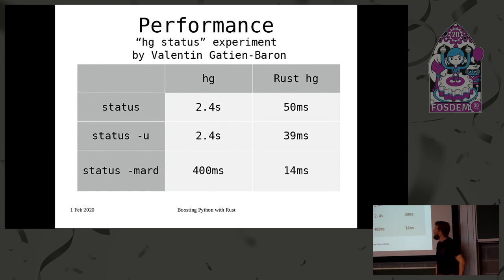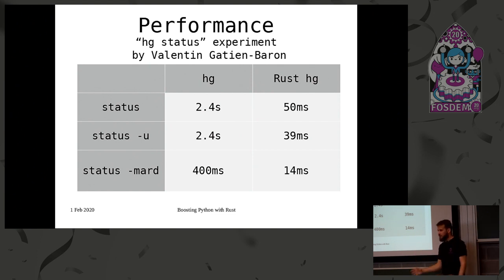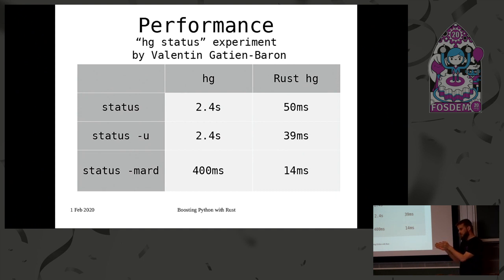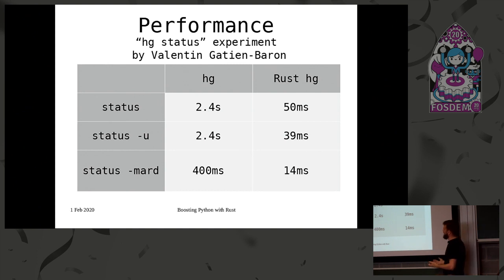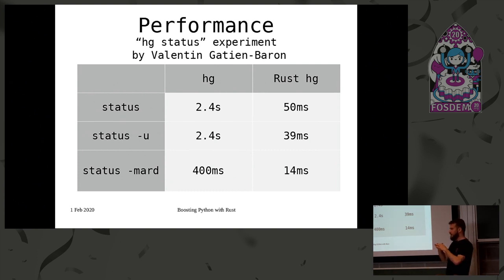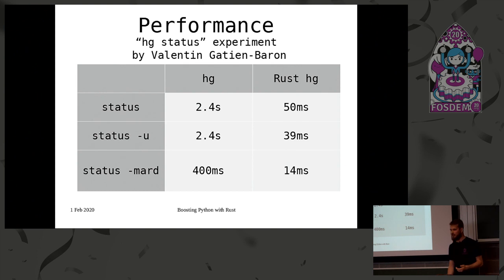There was an experiment by Valentin Gertien-Baron, a developer at Jane Street, who built a very small subset of the status command in pure Rust — not complete, just a little bit of what status does, but good enough for their purposes. The performance was just miles better than the reference Python and C implementation. That sparked a lot of interest in the community, and around that time we really started putting Rust to use and digging into it.